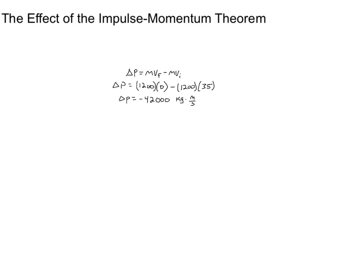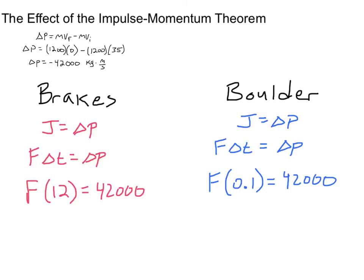So now, if impulse is equal to the change in momentum, we can use this to figure out what's going to happen with the forces involved in each of those stops. If we use the brakes to take a nice controlled stop, our impulse is equal to the change in momentum. So our average force times the time interval of 12 seconds ends up giving us an average force in this stop of 3,500 newtons.